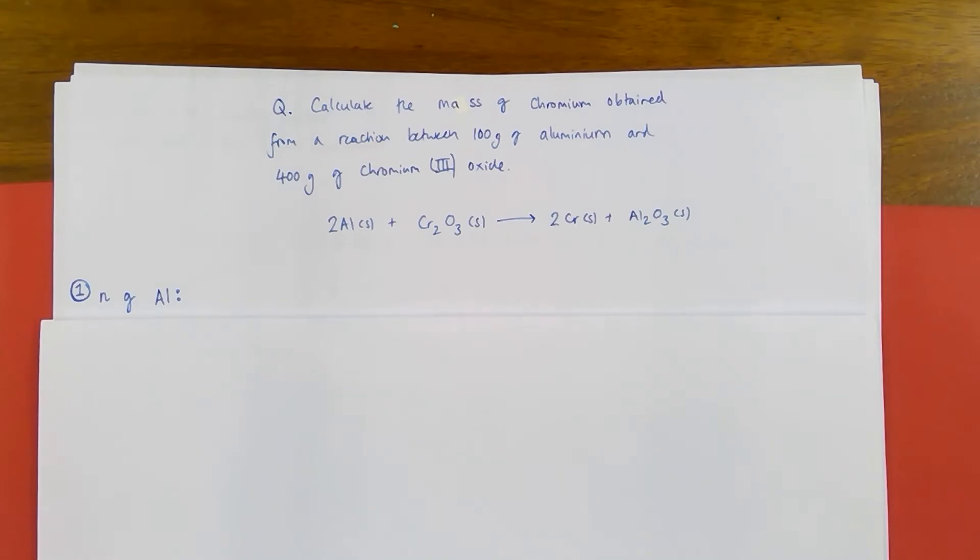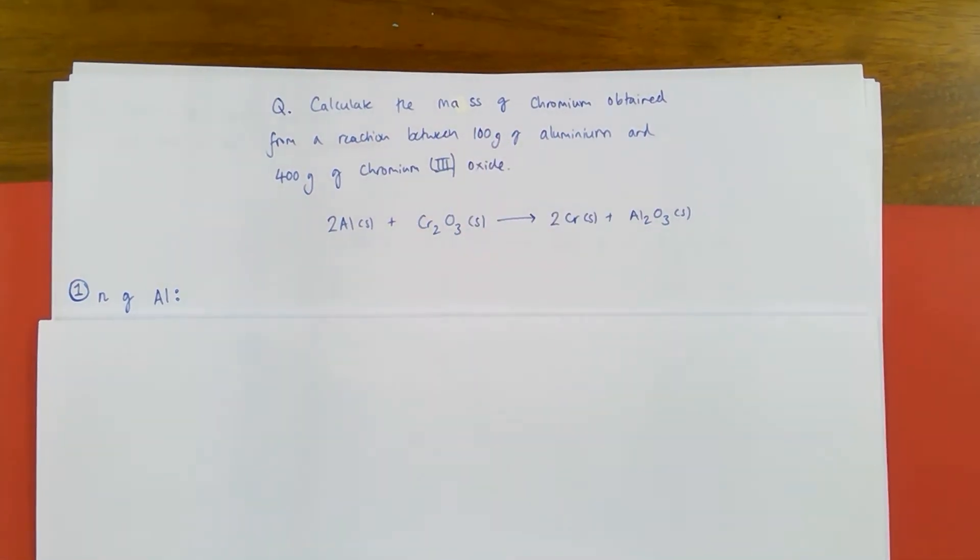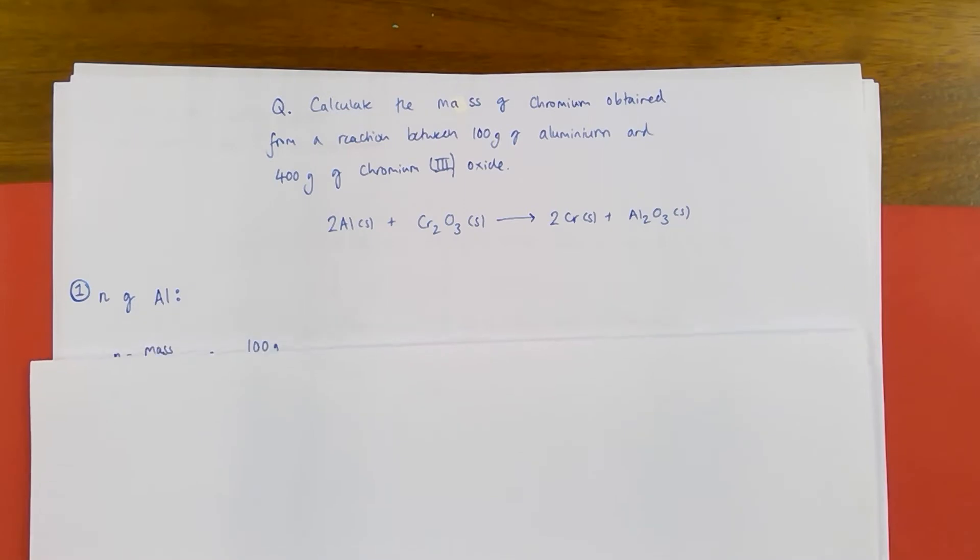Step one is working out moles of the reactants. You can do that because you have masses and you know the identity of the particular reactants involved. I'm going to first work out the moles of aluminium. Moles equals mass divided by relative mass. In this case it's AR, the relative atomic mass, because we're dealing with elemental aluminium. So 100 grams from the question divided by 27, the relative atomic mass of aluminium, gives me 3.704 moles of aluminium.